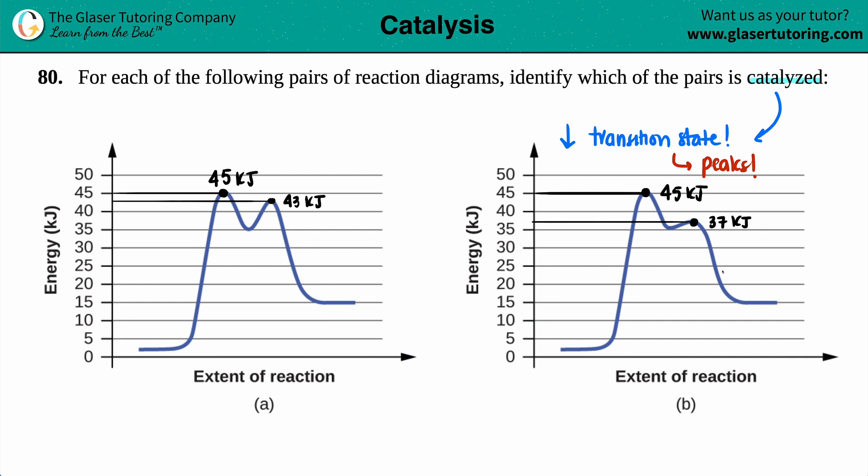So we just have to compare those transition states. 45, 45, that's no difference. But 43 and 37, this one is the lower peak. And you can clearly see that by just looking at it, this one was a higher peak, this one's a lower peak. The lower the transition state, the lower the peaks.